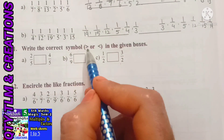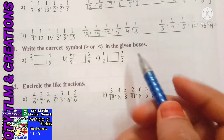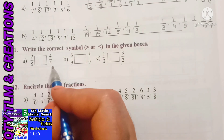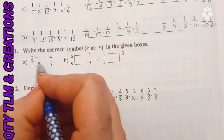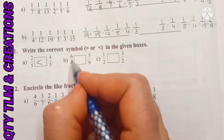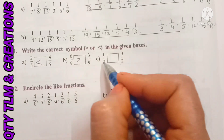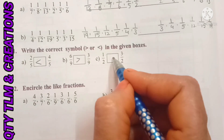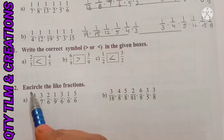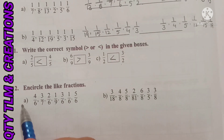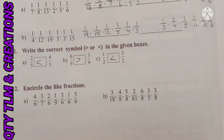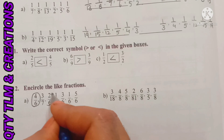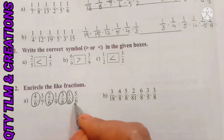Next question: write the correct symbol — greater than or less than — in the given boxes. These fractions are like fractions, so which fraction has the smallest numerator is the smallest fraction. A: 2 by 5 is less than 4 by 5. B: 6 by 9 is greater than 3 by 9. C: 1 by 2 is less than 3 by 2. Next question: circle the like fractions. Fractions which have the same denominator are called like fractions. So 4 by 6, 2 by 6, 3 by 6, 1 by 6, and 5 by 6 are like fractions.